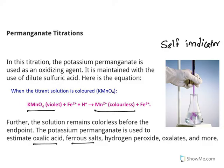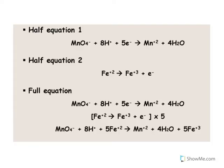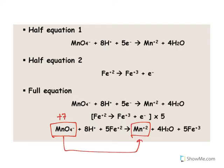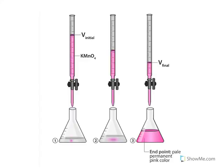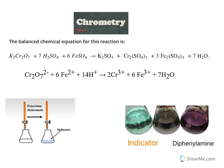Potassium permanganate is used to estimate oxalic acid, iron salts, hydrogen peroxide, oxalates, and more. In the reaction, manganese goes from the +7 oxidation state to +2, taking up five electrons. Iron moves from +2 to +3, donating electrons and getting oxidized. In the titration setup, the burette contains potassium permanganate; at the endpoint the solution is colorless, and upon adding excess it becomes pale pink, serving as the endpoint.